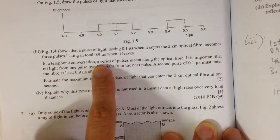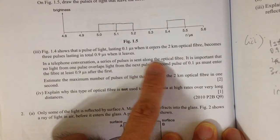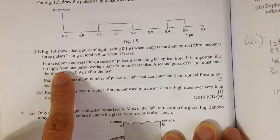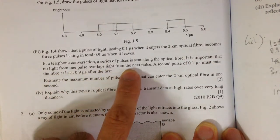In a telephone conversation, a series of pulses is sent along optical fiber. It is important that no light from one pulse overlaps the light from the next pulse.